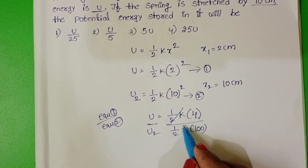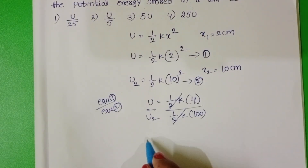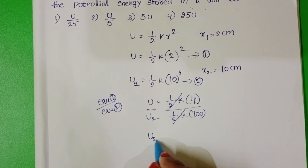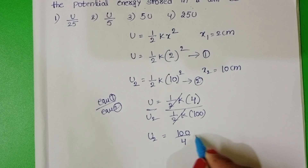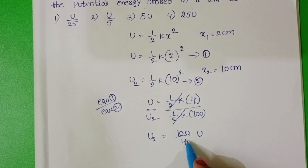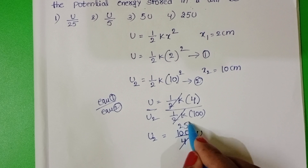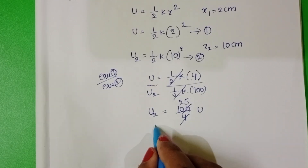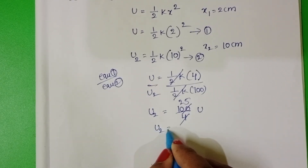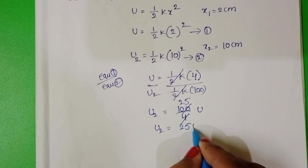Half k gets cancelled. U2 equals 100 over 4 into U, which gives 25. Therefore U2 equals 25U.